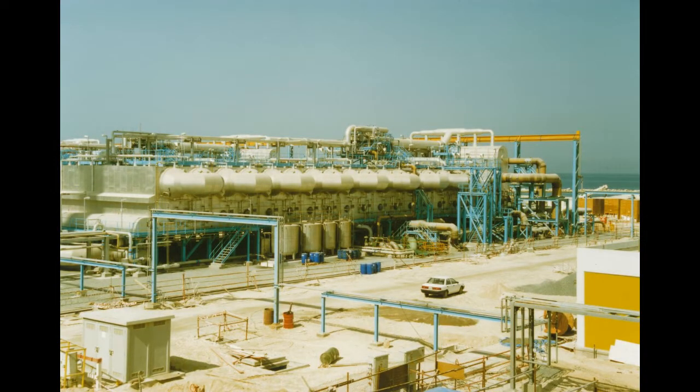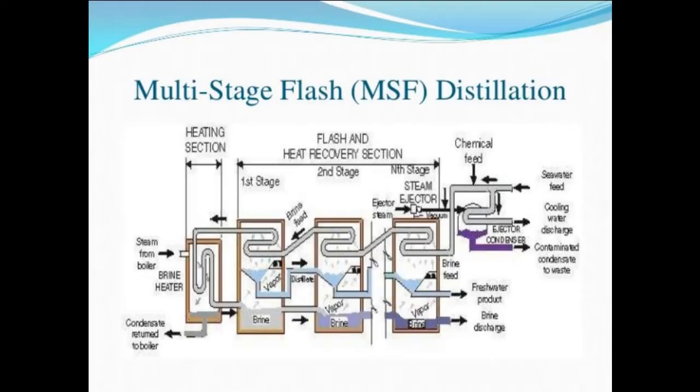The multi-stage flash method heats seawater and introduces it to a vacuum chamber to flash it into vapor. The fresh water vapor at the top of the chamber is removed and condensed. The remaining vapor and salt brine at the bottom of the chamber is then retreated in successive chambers to remove more fresh water.